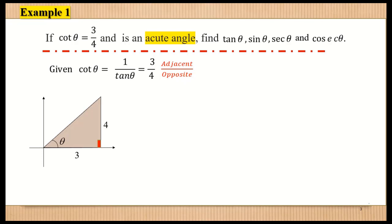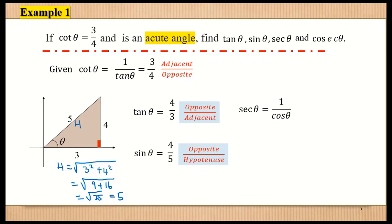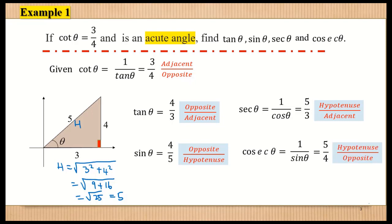To find the length of the hypotenuse, we use the Pythagorean theorem. The value of H equals the square root of 3 squared plus 4 squared, which is the square root of 9 plus 16, giving the square root of 25, which equals 5. So tangent theta equals 4 over 3, which is opposite over adjacent. Sine theta is 4 over 5, which is opposite over hypotenuse. Secant theta is 1 over cosine theta, equal to 5 over 4, which is hypotenuse over adjacent.